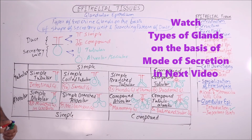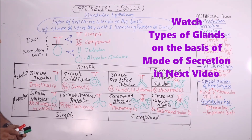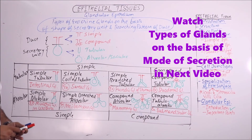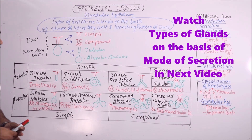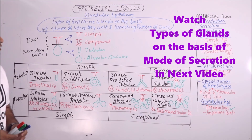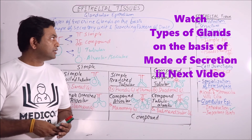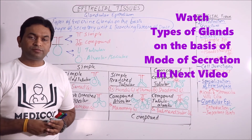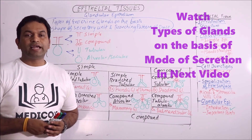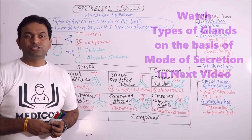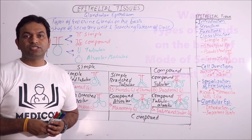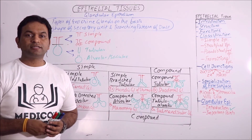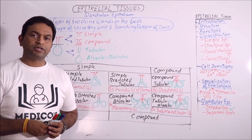So this is the classification of exocrine glands on the basis of shape of secretory units and the branching pattern of ducts. Please hit the like button, share, and subscribe to our channel to get the latest updates and notifications.